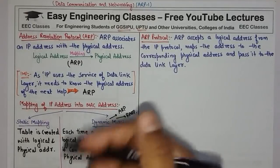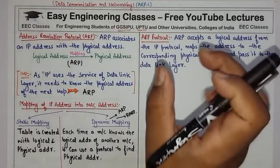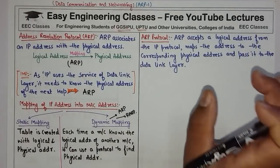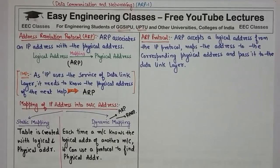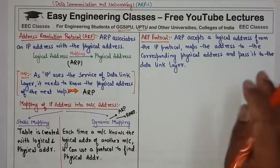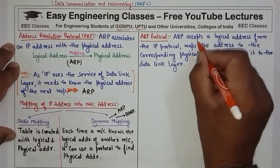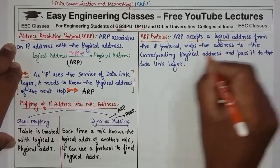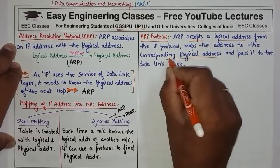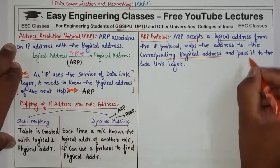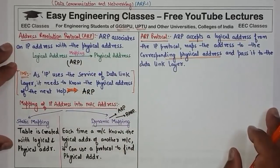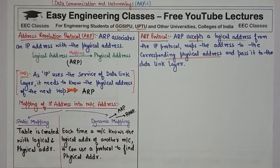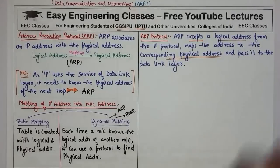This is the basic theory of ARP. Now we will see how ARP works. The ARP protocol accepts a logical address from the IP protocol, maps it to the corresponding physical address, and then passes it on to the Data Link Layer. So basically, ARP accepts a logical address, finds the corresponding physical address, and passes it on.